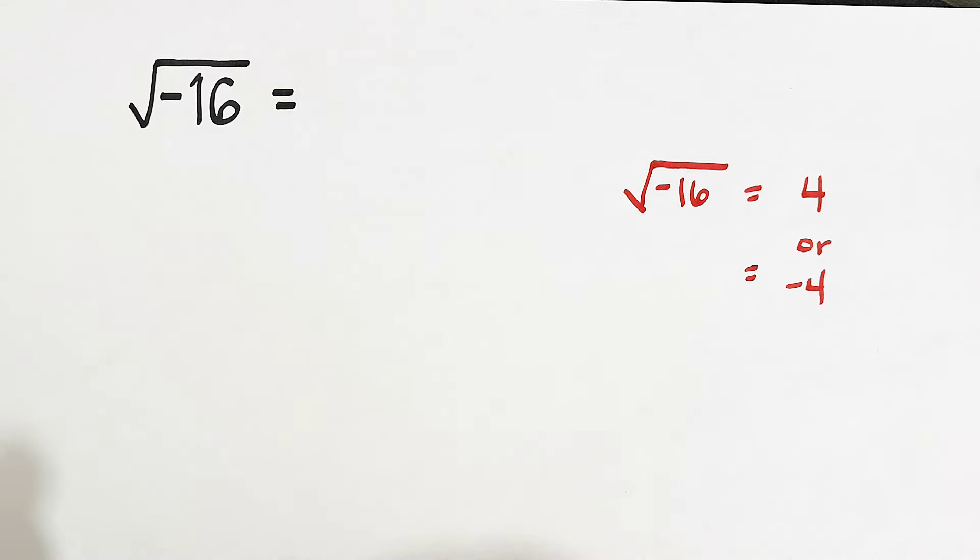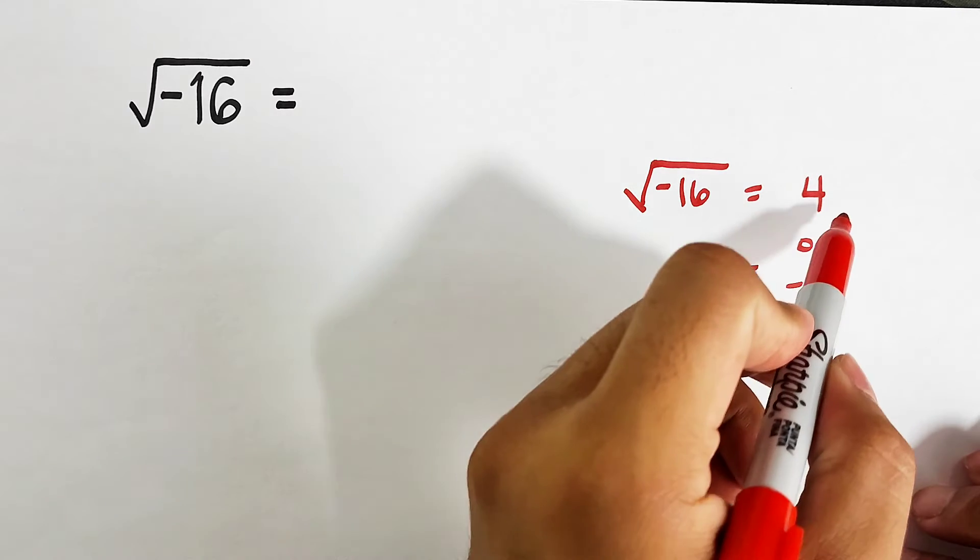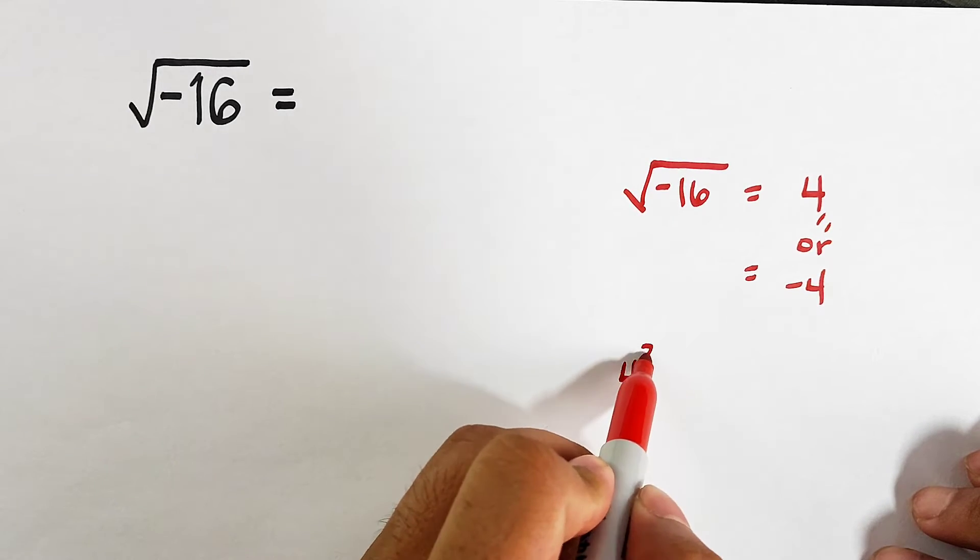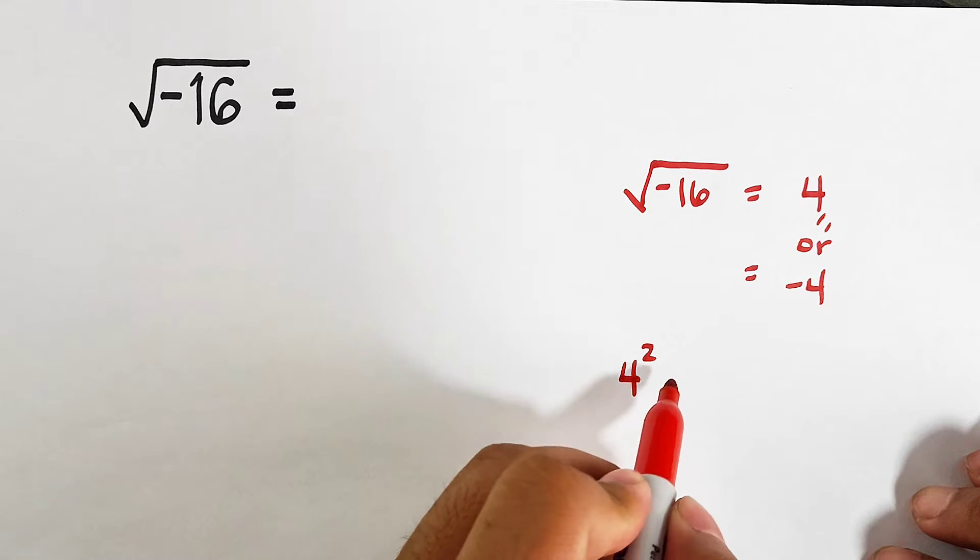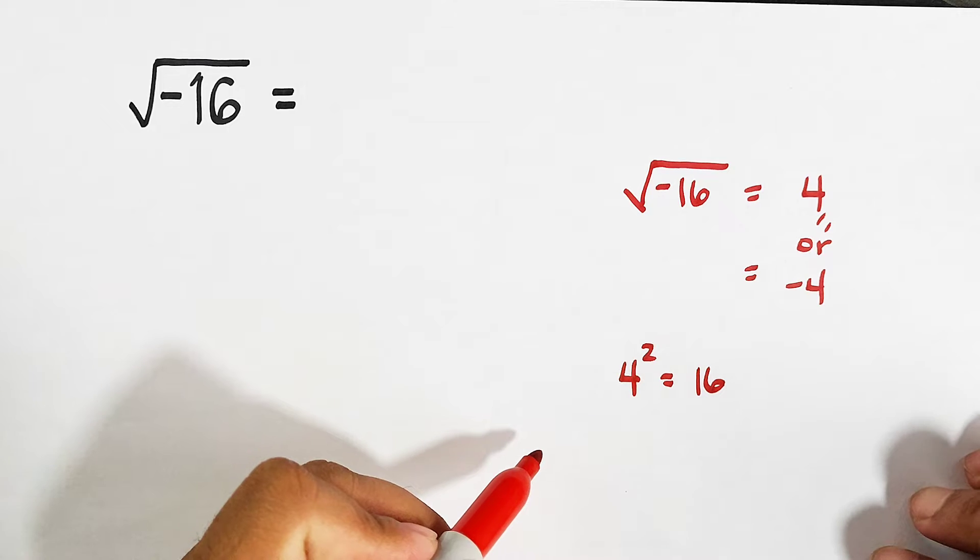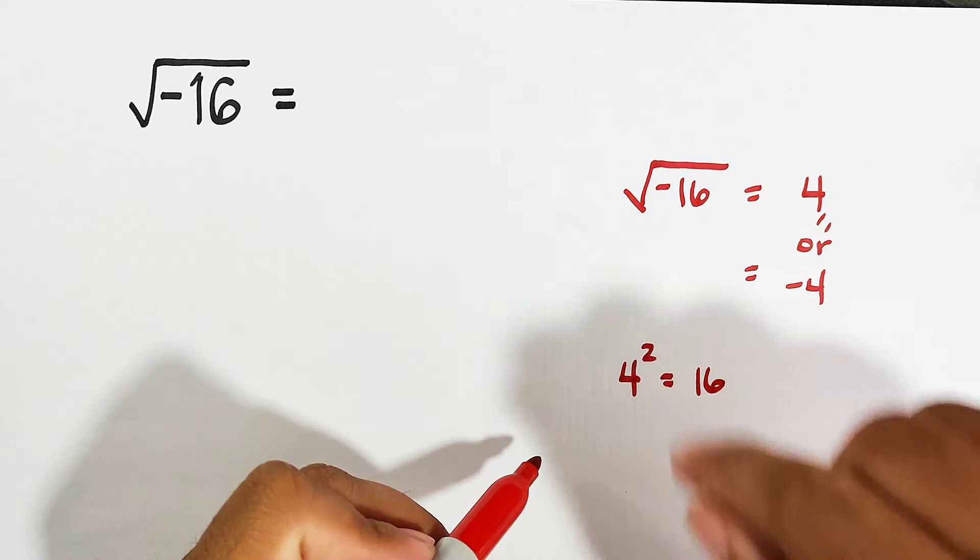So let me give you a short idea why 4 or negative 4 are incorrect. So let's say for example, we take this 4. 4, when you square it, 4 squared is equal to 16. And as you can see, we didn't get negative 16.